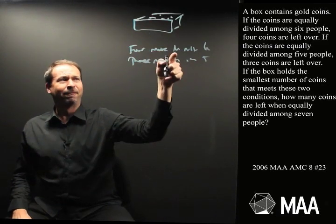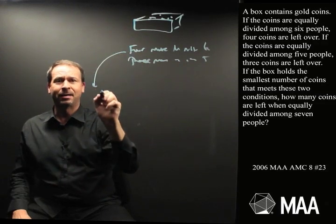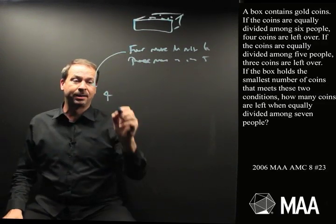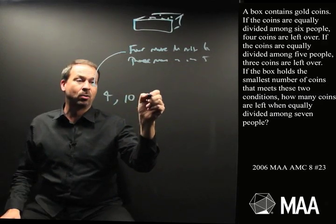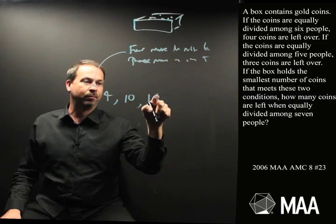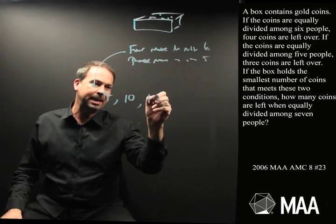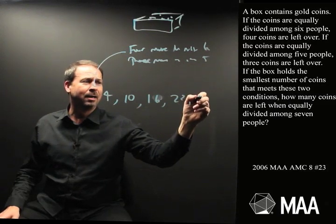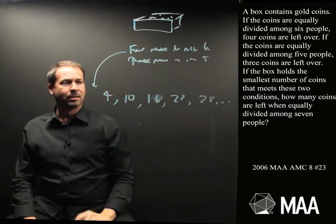So number of coins is four more than a multiple of six. So I guess that means it could either be just four coins, that's four more than zero and zero is a multiple of six, or ten coins, or four more than twelve is sixteen, twenty-two, twenty-eight, and so on. So it's one of those numbers there.